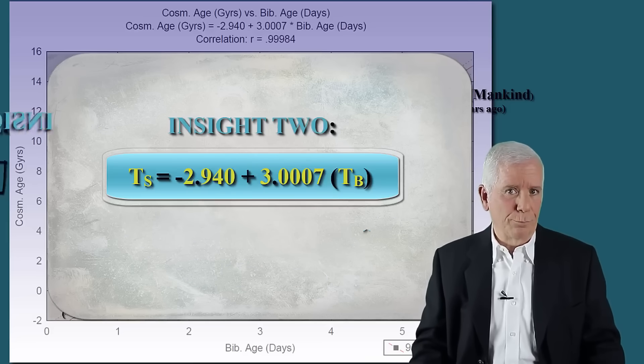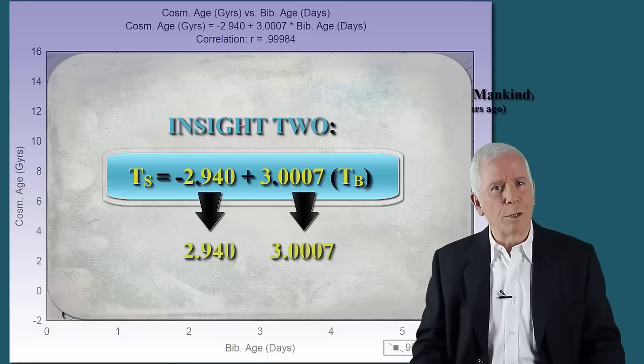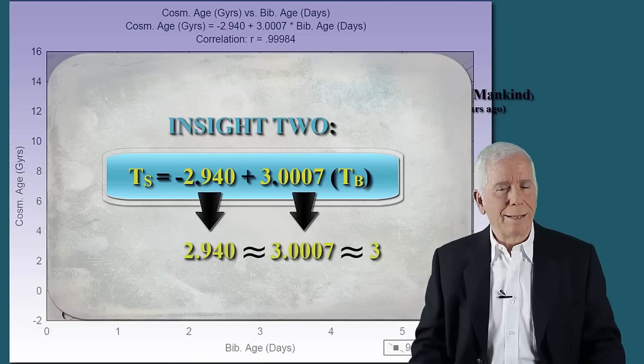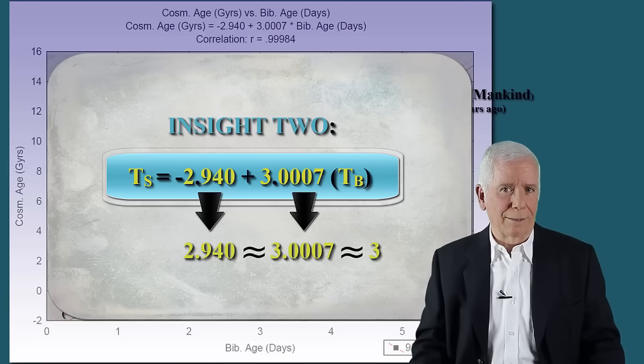Insight two. The two numbers that appear in the equation are nearly identical and equal to three. This is probably not coincidental, which leads us to the third insight.